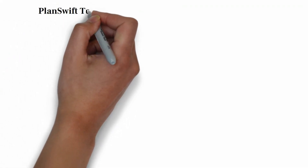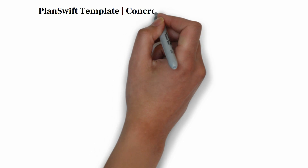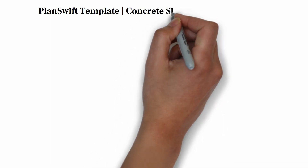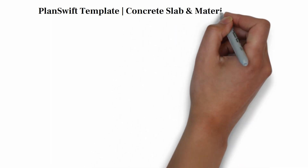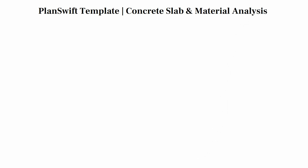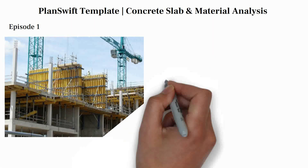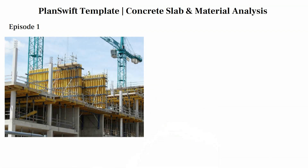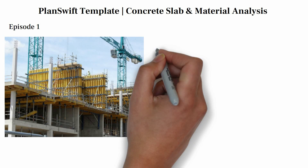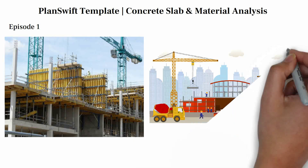Welcome to the first episode of Plant Shift Tutorial. In this episode, we will be exploring the ticketing process of concrete slab, material analysis, and also creating a template to fast track our future work process. A concrete slab is a common structural element of modern buildings, consisting of a flat, horizontal surface made of cast concrete. They are typically between 100 and 500 mm thick.